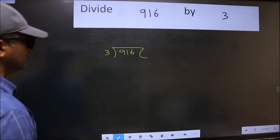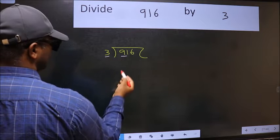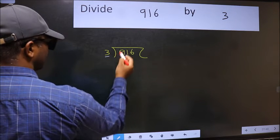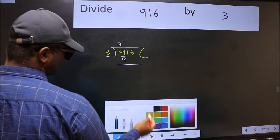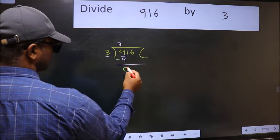Next, here we have 9 and here 3. When do we get 9 in the 3 table? 3 times 3 is 9. Now we should subtract. We get 0.